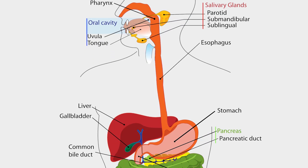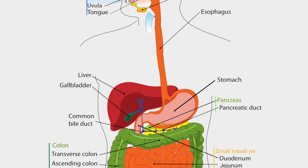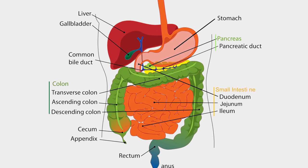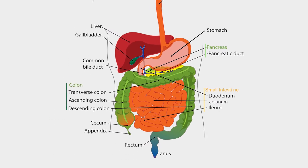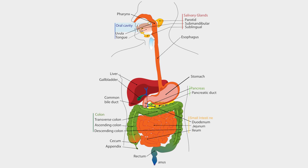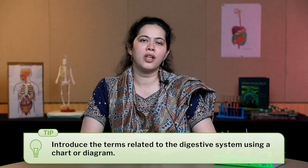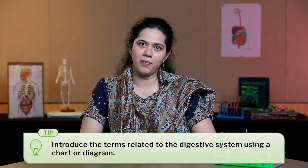After the introductory activity, you can explain the path taken by the food from mouth to anus using a large chart or a diagram. This is a good way to introduce all the terms related to the digestive system, and the students also get a good idea about the structure of the digestive system.